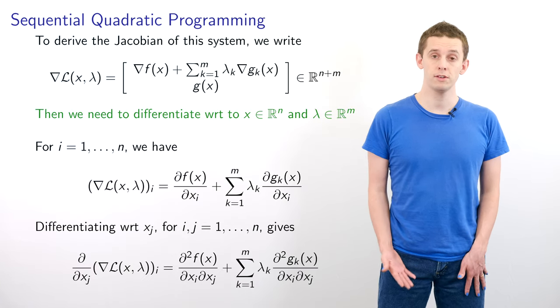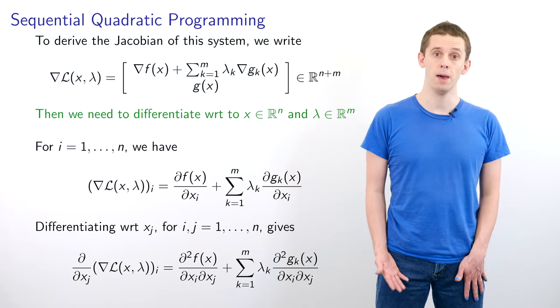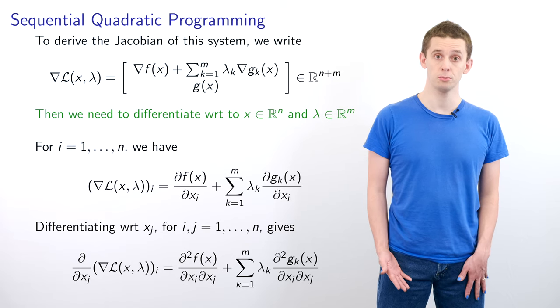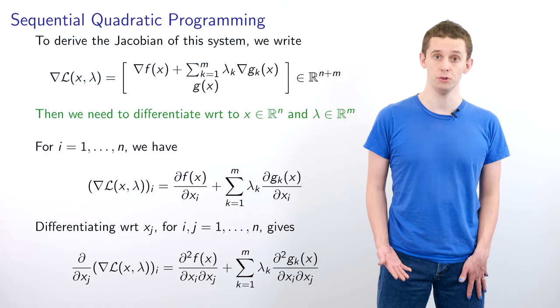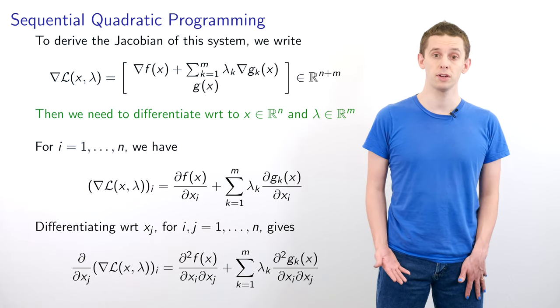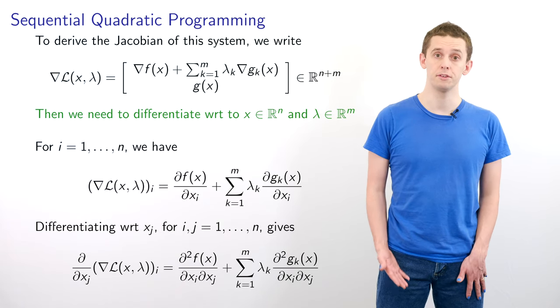Let's now think of the gradient of L as an n+m dimensional vector, where the first n components correspond to the x coordinates, and the last m components correspond to the lambda coordinates. We need to differentiate the gradient of L with respect to both x and lambda.